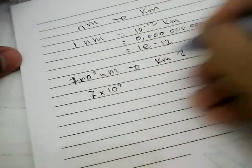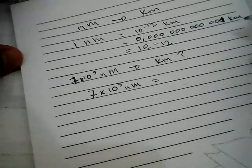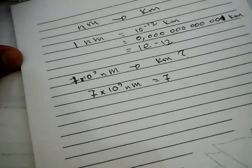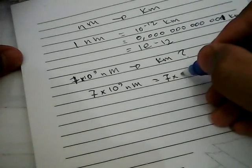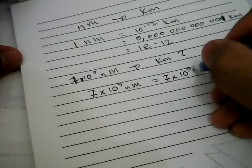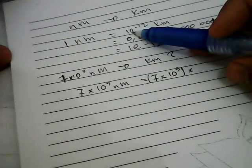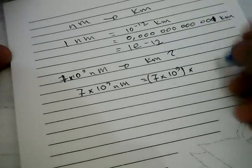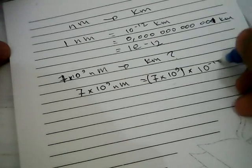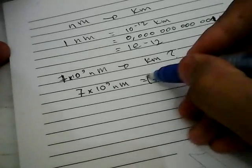We can write seven billion as 7 times 10 to the power of 9. So we have 7 times 10 to the power of 9 nanometers, and we need to multiply this number by the conversion factor 10 to the power of minus 12.